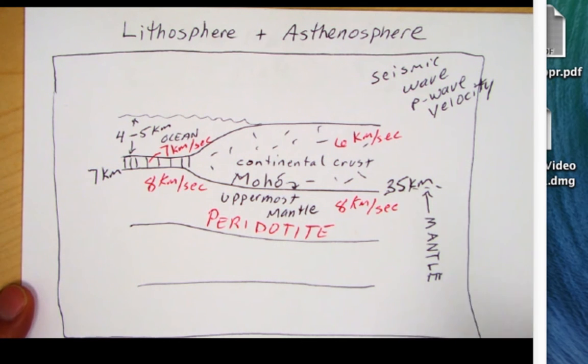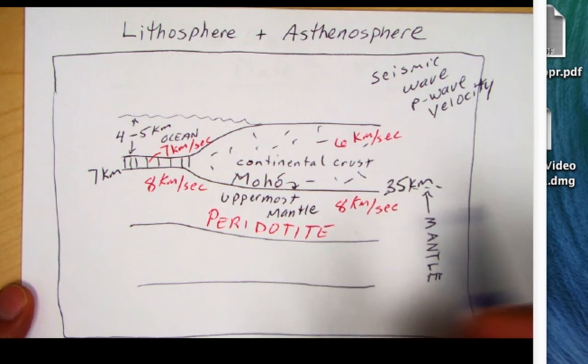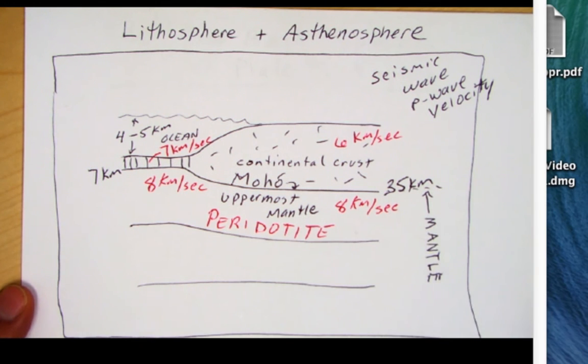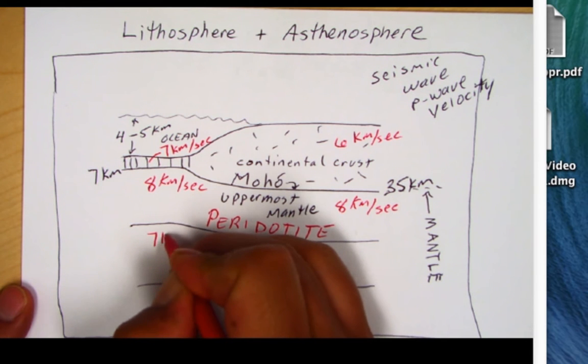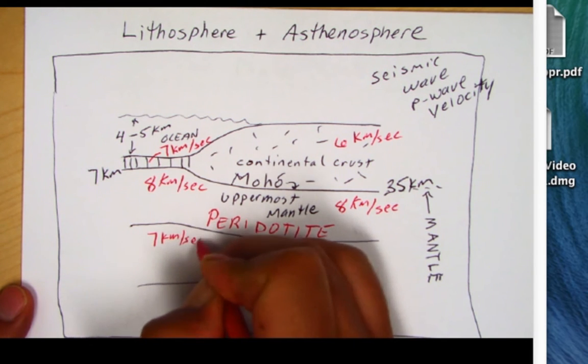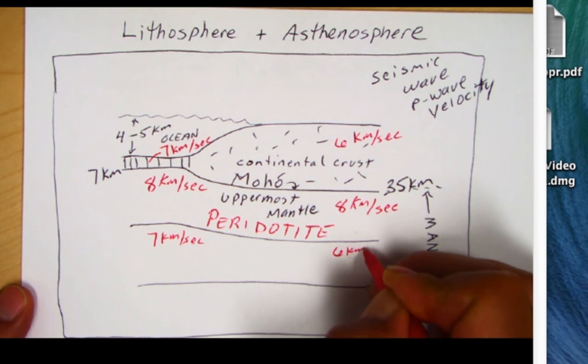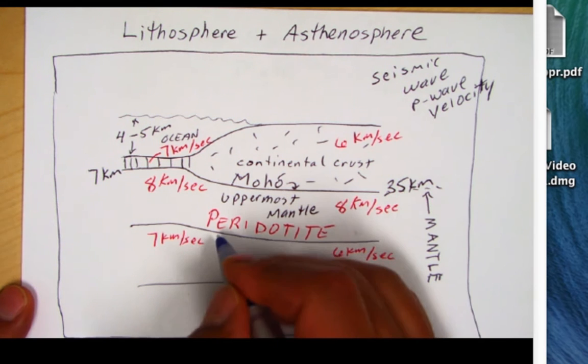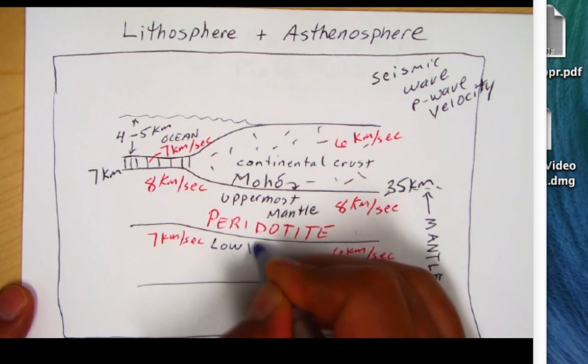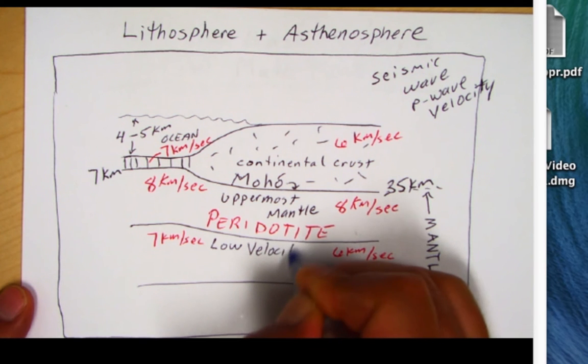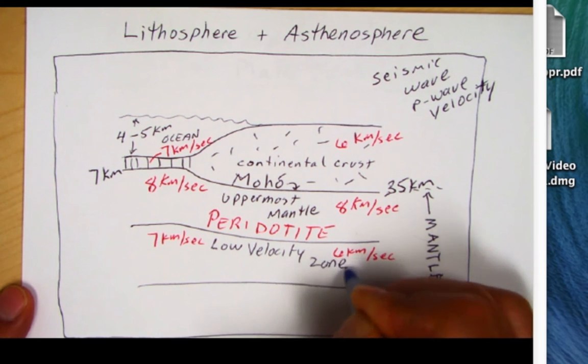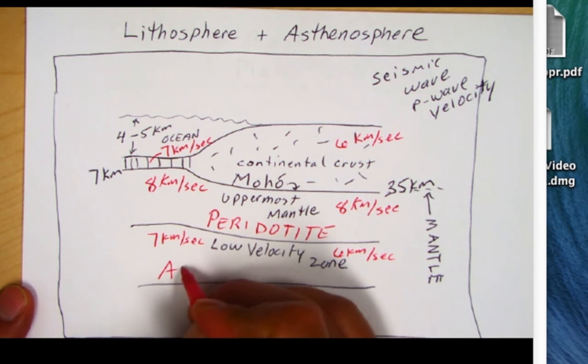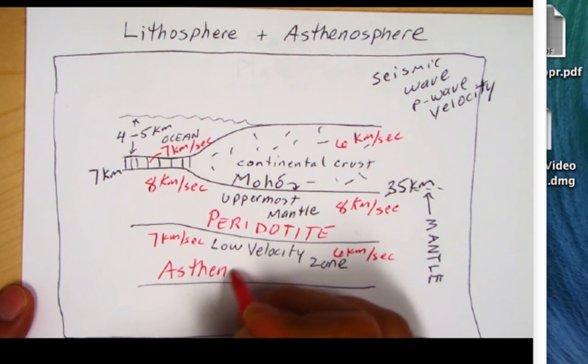Now, another interesting thing that happens is once seismic waves go through the uppermost mantle, they encounter a weak layer where seismic waves either slow back down to seven kilometers per second, in some cases down to six kilometers per second. But there's a clear slowdown. So seismologists call this a low velocity zone, which means that the seismic waves are encountering something weak. And so geologists call this layer the asthenosphere.